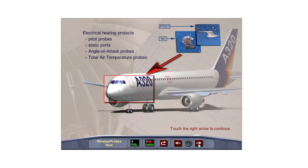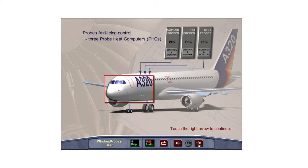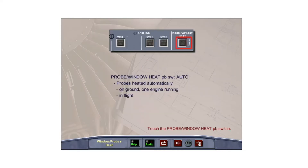Electrical heating is used to protect pitot probes, static ports, angle of attack probes, and total air temperature probes. Three probe heat computers, or PHCs, control the probe anti-icing system. The PHCs automatically control and monitor the system, protect against overheating, and transmit fault messages to the ECAM. The probe anti-icing system is controlled by the probe window heat push-button switch on the anti-ice panel. The probes are heated automatically if the switch is in its AUTO lights-out position with at least one engine running or in flight. When the aircraft is on the ground, the TAT probes are not heated and pitot heating is in low power. High power is automatically selected when the aircraft is in flight.